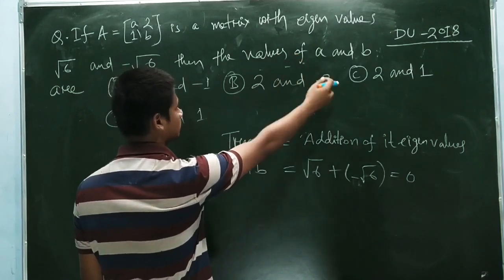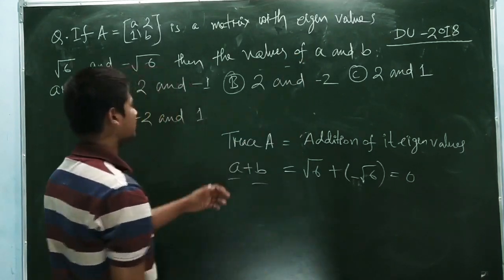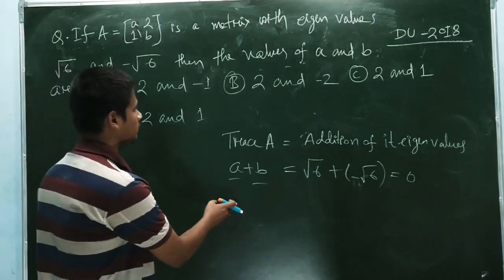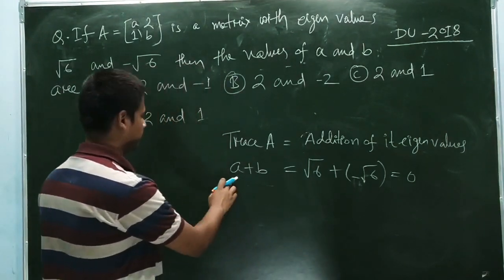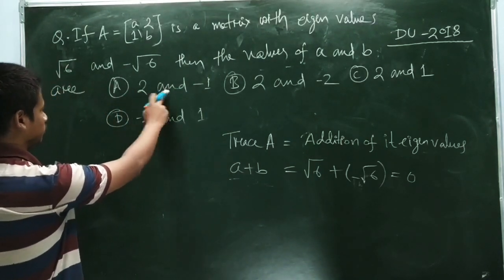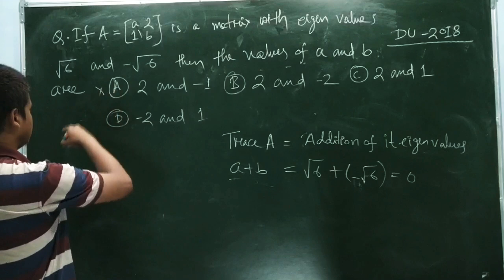They are asking about the value of a and b. Now from the options we can easily solve this question. See, a plus b equals 0. So here, 2 and minus 1: 2 minus 1 is 1, so this is not it.